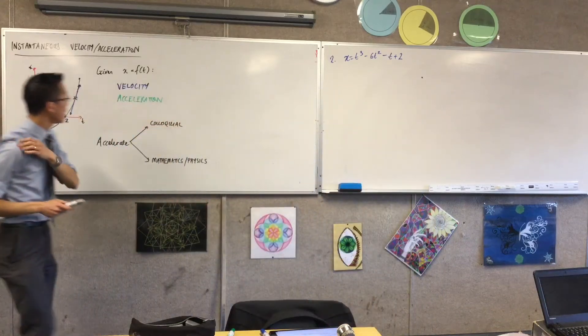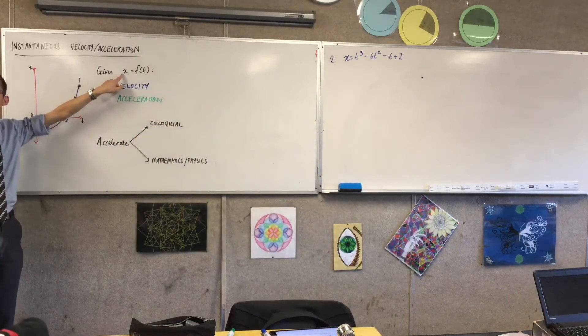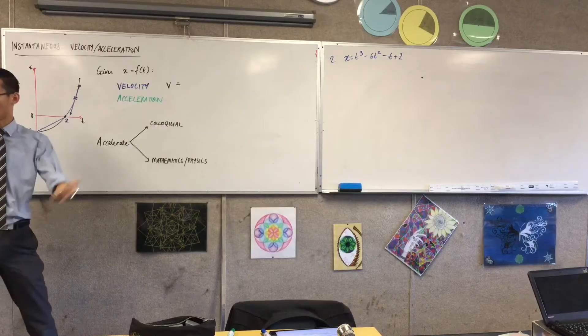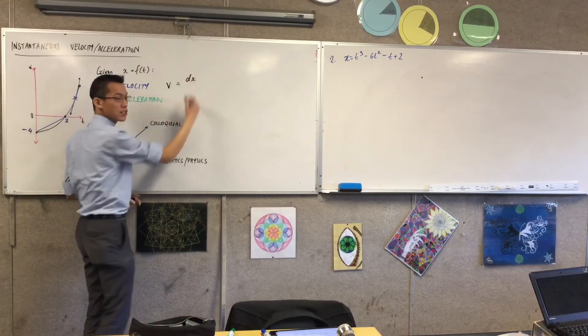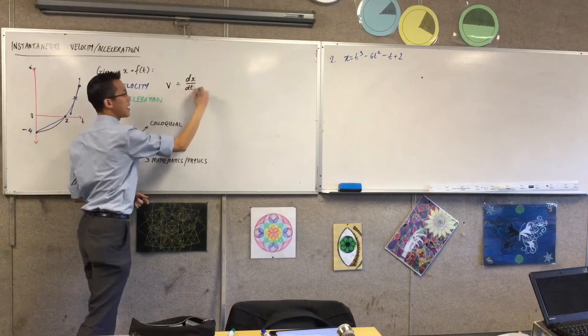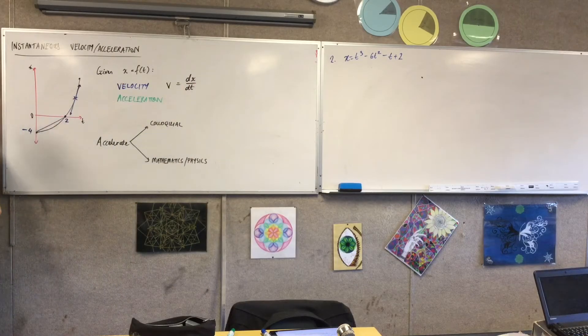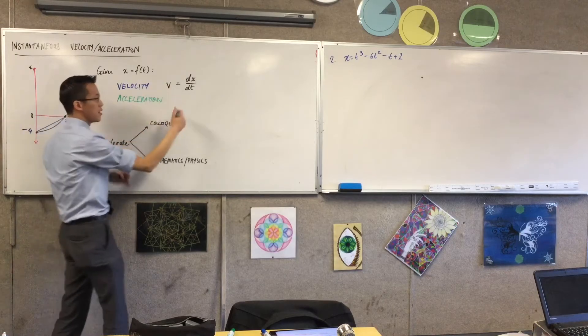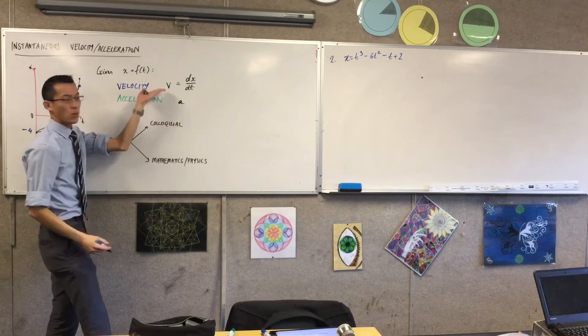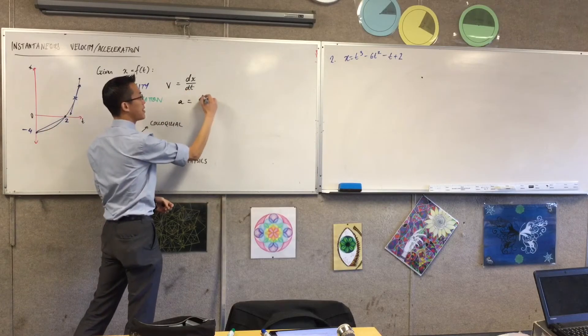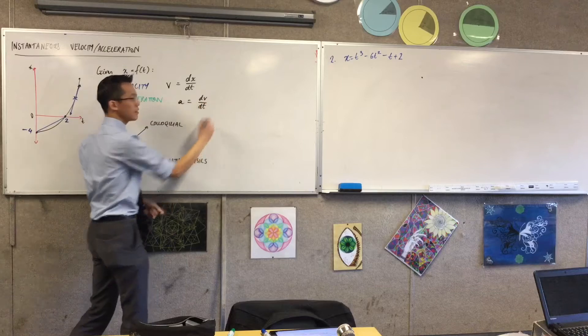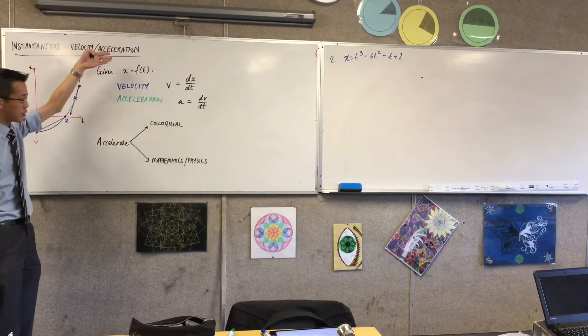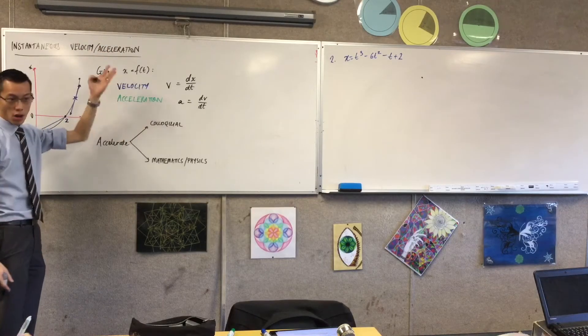So remember we said velocity is how displacement is changing over time. So velocity v is simply equal to, I'm just going to differentiate. I want to know how x is changing as time is changing. Now we said acceleration is also really important. It's how velocity is changing over time. So if I call acceleration a, then I'm going to take whatever that expression for velocity was, and then I'm going to differentiate that. So velocity, derivative with respect to time, of displacement. Acceleration is the derivative with respect to time of velocity.